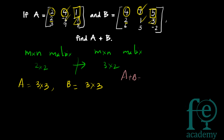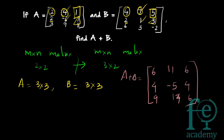A plus B is equal to: adding corresponding elements — 2 plus 4 is 6, 4 plus 7 is 11, 1 plus 5 is 6, 2 plus 2 is 4, minus 6 plus 1 is minus 5, minus 1 plus 3 is 2, 3 plus 6 is 9, 9 plus 5 is 14, and 8 minus 2 is 6. So A plus B is equal to the matrix: 6, 11, 6; 4, minus 5, 2; 9, 14, 6.